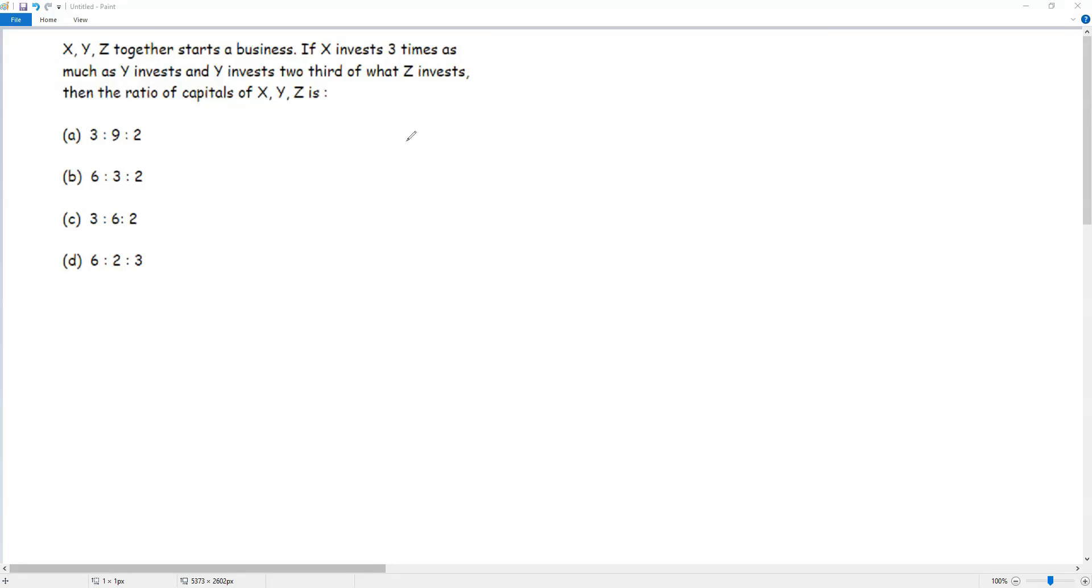Here X is linked to Y because X invests three times as much as Y, and Y is linked to Z. That is, Y invests two-third of what Z invests. So X is linked to Y and Y is linked to Z.